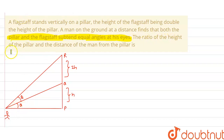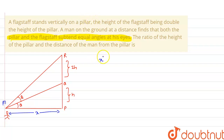We need to find the ratio of the height of the pillar to the distance of the man from the pillar. Let's suppose this distance is equal to x, and this is my point M. So we have to find h upon x, and we write that as y. We have to find this y using the right angle triangle.